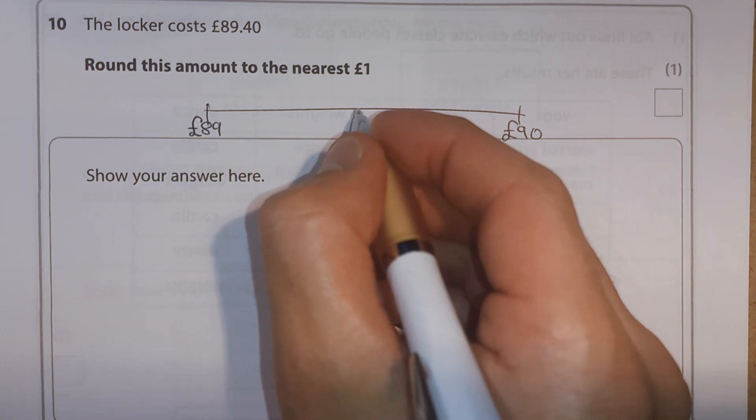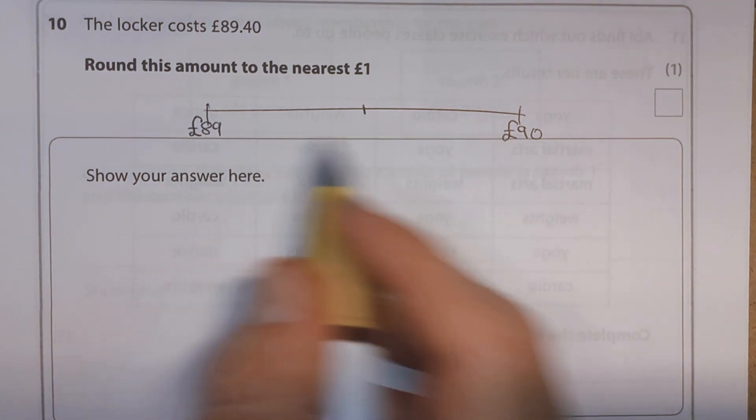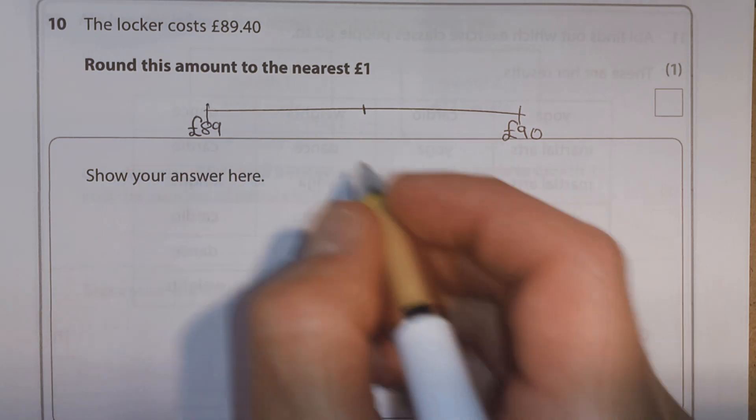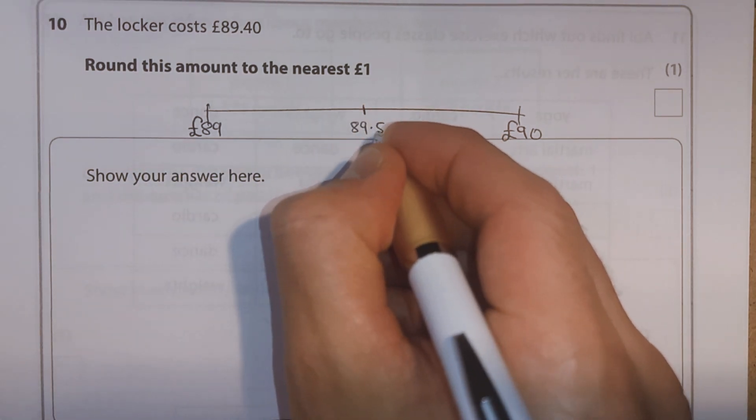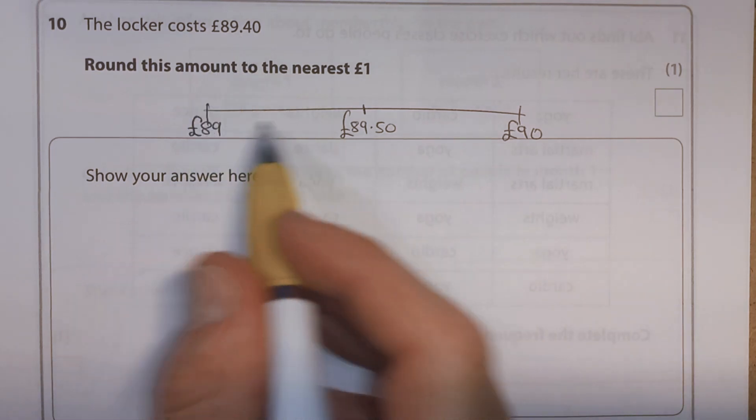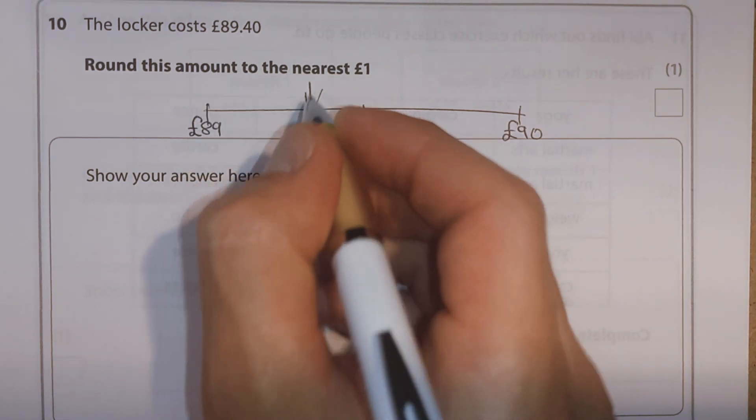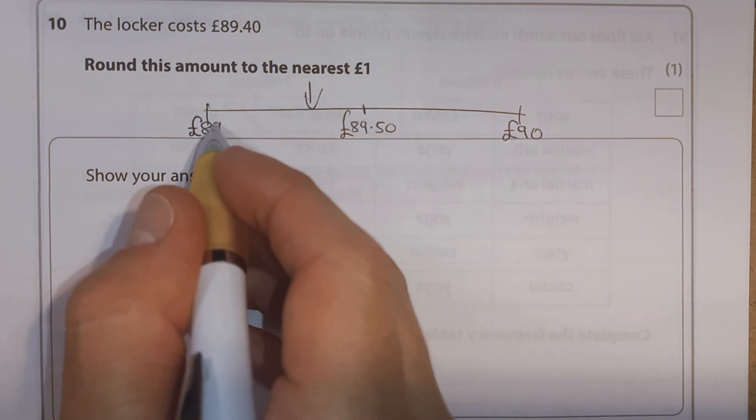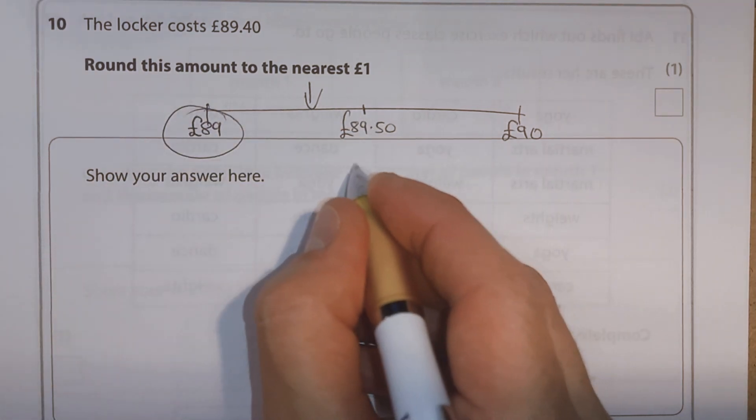Well, what would be halfway in the middle? Well, half of a pound is 50p. So halfway in the middle would be £89.50. £89.40, well, that's going to fit in this side. It doesn't matter exactly where, but we know it's this side. That means we're going to round down to the £89.